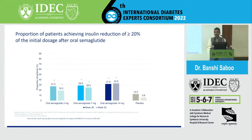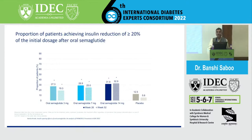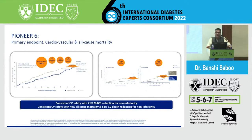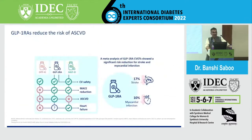We reduce insulin dose by 20% when initiating GLP-1 and then monitor and adjust based on sugar control. As we escalate semaglutide from 3 mg to 7 mg to 14 mg, we may reduce insulin dose further. The Pioneer 6 data showed consistent CV safety: 21% MACE reduction for non-inferiority, 49% all-cause mortality, and 51% CV death reduction with oral semaglutide. GLP-1 also reduces ASCVD risk, unlike DPP4. Meta-analysis of GLP-1 cardiovascular outcome trials showed significant risk reduction for stroke and myocardial infarction.